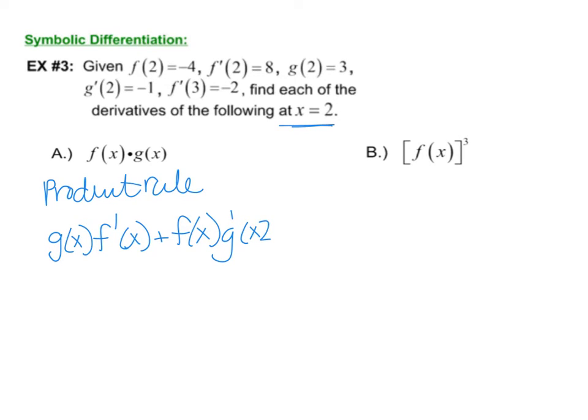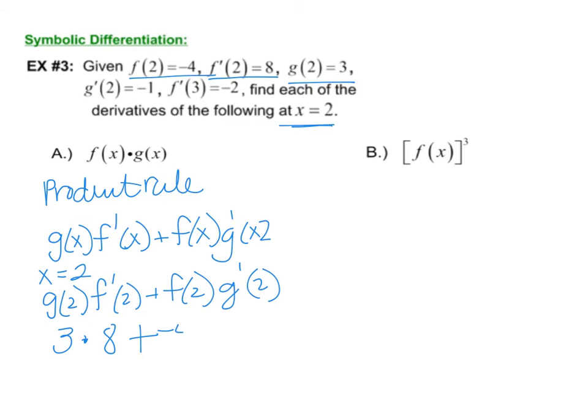Alright? And we're being asked to find the derivative at x equals 2. Right? So if we rewrite that, we have g of 2, f prime of 2, plus f of 2, g prime of 2. And then we go back to the data that we were given. And it says, what is g of 2? Well, g of 2 is 3. What's f prime of 2? Well, f prime of 2 is 8. And that's a times in between. Then a plus. f of 2 is -4. And g prime of 2 is -1. So you have 24 plus 4, which is 28. That's how that works.